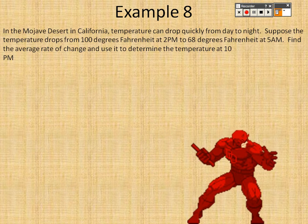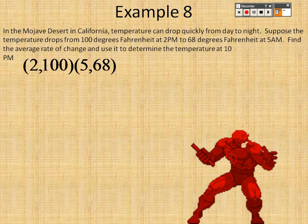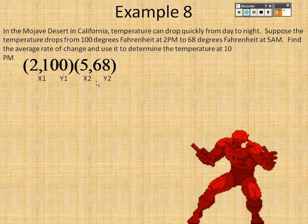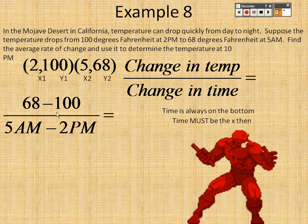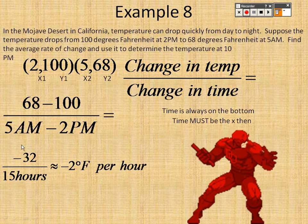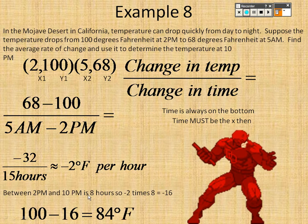In the Mojave Desert in California, temperature can drop quickly from day to night. Suppose the temperature drops from 100 degrees Fahrenheit at 2 p.m. to 68 degrees Fahrenheit at 5 p.m. Average rate of change: 68 minus 100 over the 3-hour difference gives approximately negative 32 over 15, about negative 2 degrees Fahrenheit per hour. Between 2 p.m. and 10 p.m. is 8 hours, so negative 2 times 8 is negative 16 degrees, meaning it was about 84 degrees Fahrenheit at 10 p.m.